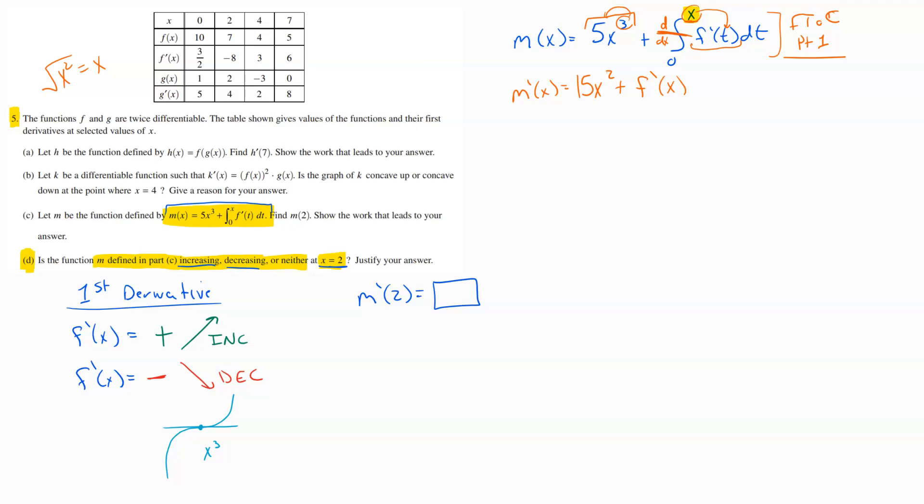Now that we have our derivative, we need to go plug in 2 to see if that thing is positive or negative. So M prime of 2 is going to equal 15, plugging in for X, everywhere I see an X I'm plugging in 2, plus F prime of 2. So 2 squared is 4.